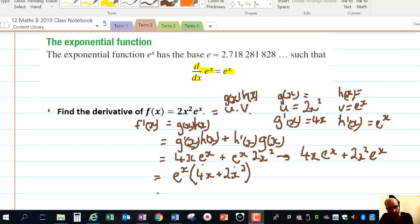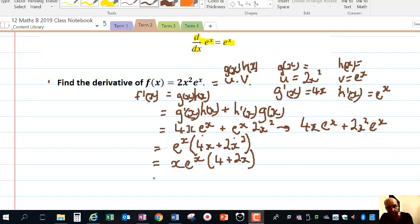And I've just spotted there's another common factor there. There's a factor of x as well. So better fully factorize it. So we've got 4 plus 2x inside the brackets there. So it's x times e to the x outside of 4 plus 2x in factorized form, which generally is the better way to express your final answer. Spotted another factor. 2x e to the x, 2 plus x. That's better.